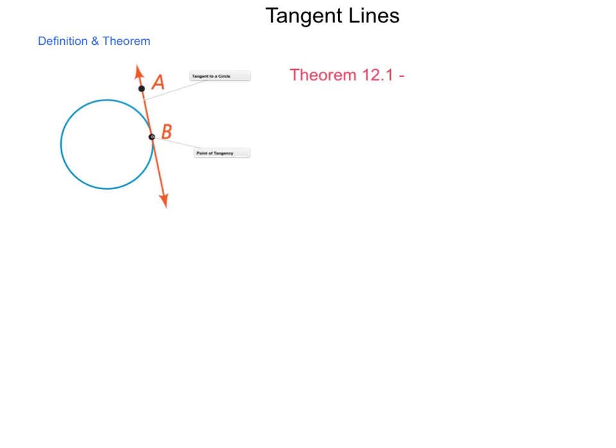A tangent line will allow us to do many things. We've talked in the past about being able to inscribe a shape or circumscribe to be able to place an item inside or just outside of a circle. And the tangent lines are what make that possible.